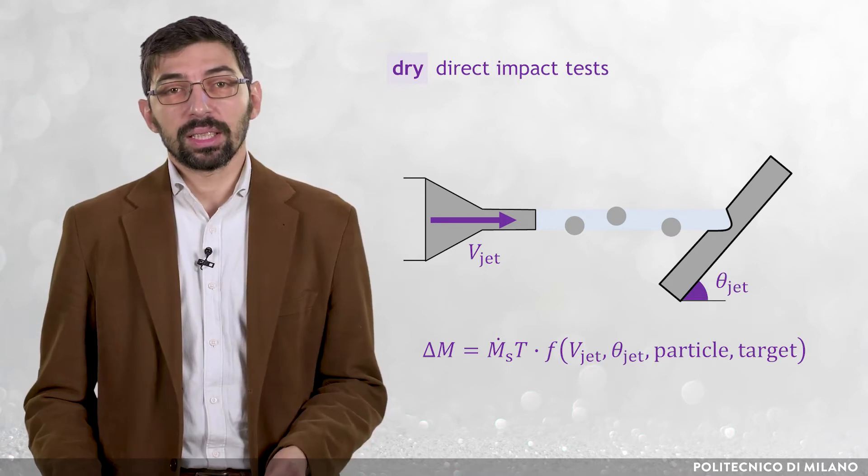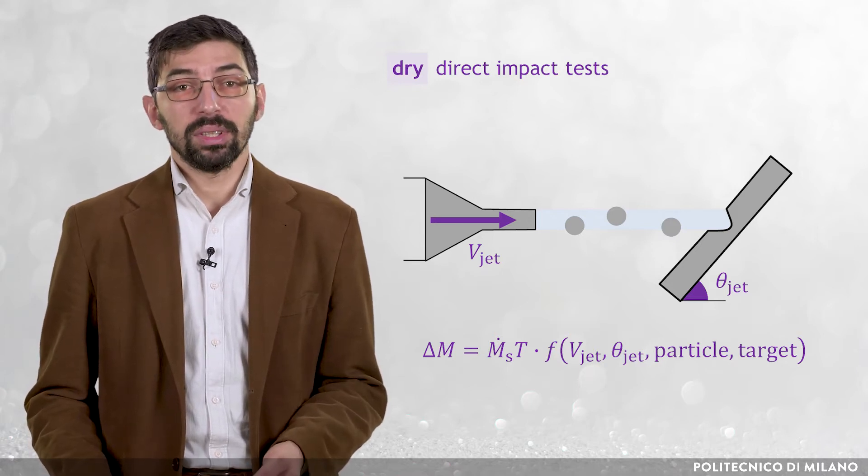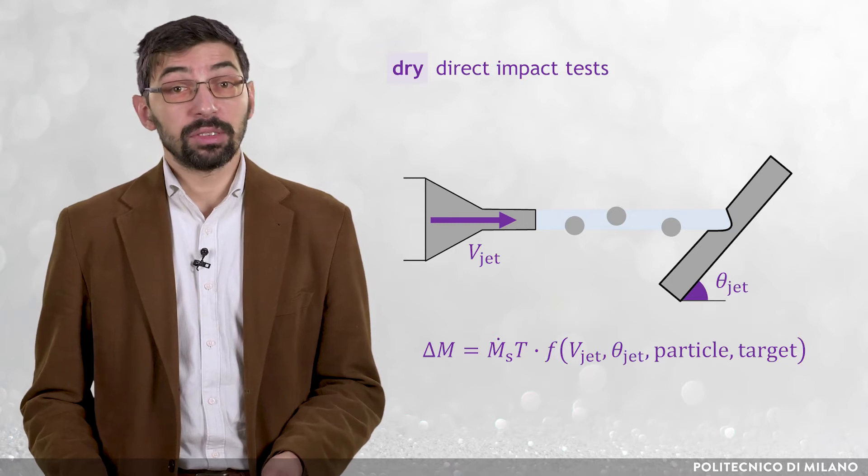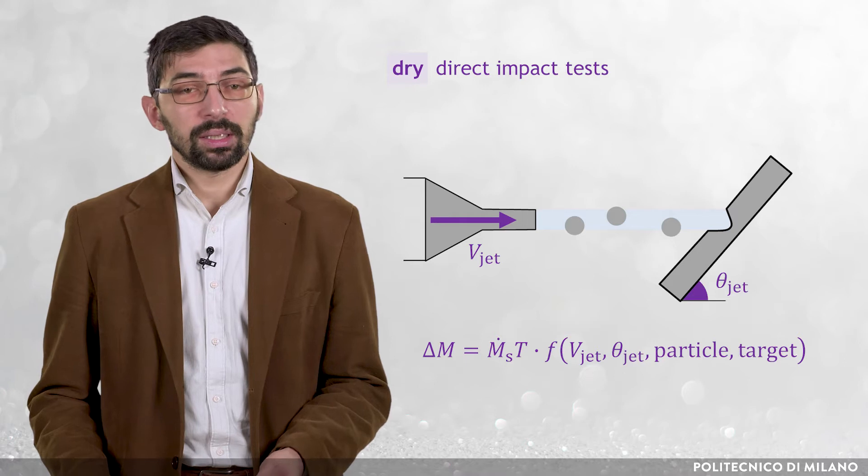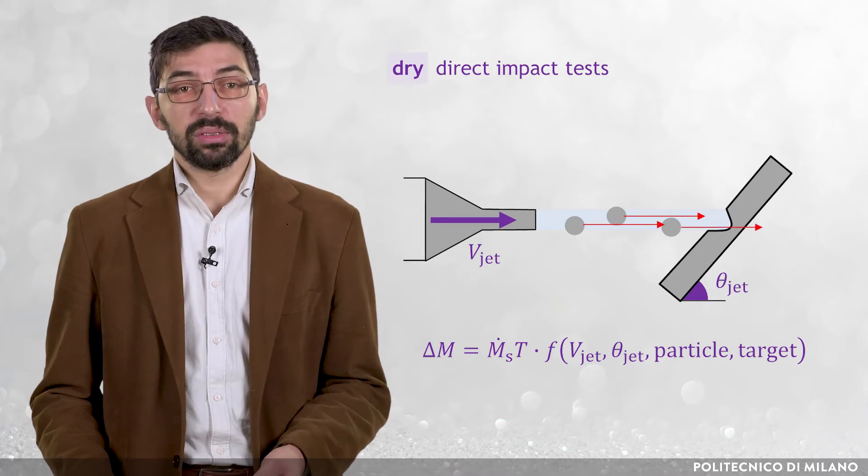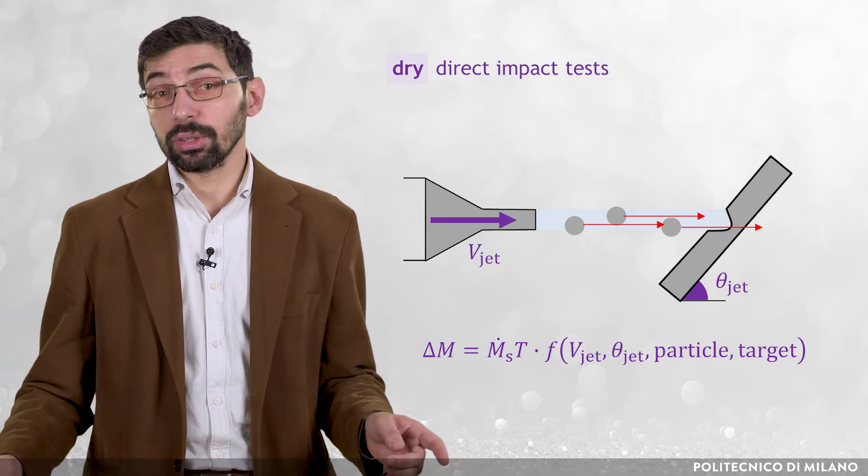As it has already been explained in the previous lesson, in dry abrasive jet impingement tests, the particle Stokes number is very high. Therefore, driven by inertia, the solids tend to move with uniform velocity, following a straight line from the nozzle exit to the target surface.